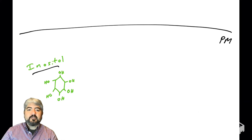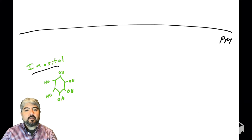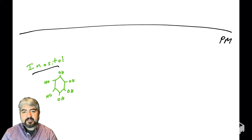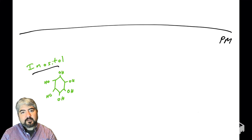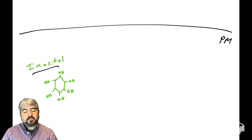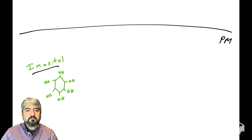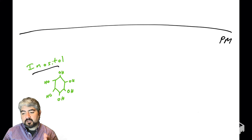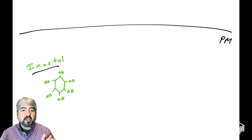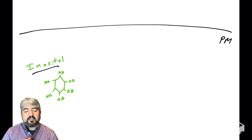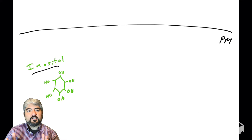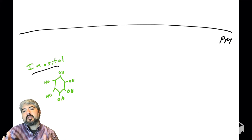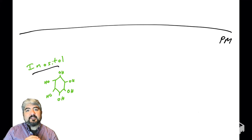We're going to start in the cytosol or cytoplasm. I've drawn a plasma membrane here, and I have drawn a sugar. What is this sugar? It is the sugar inositol — a six-carbon sugar. I've drawn the ring and hydroxyls on it. We're going to modify this sugar, inositol, to create something else that lives in the plasma membrane.